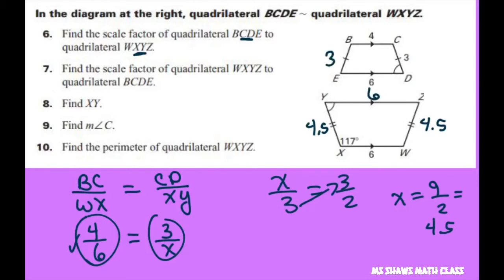Now the measure of angle C. That goes with angle X. You have to match these up. The measure of angle X is 117 degrees, so that is also the measure of angle C, 117 degrees.